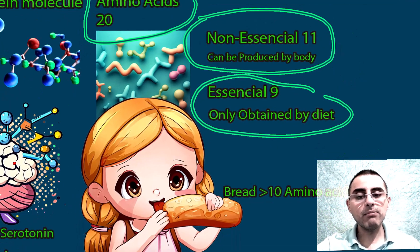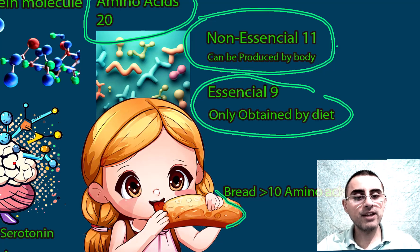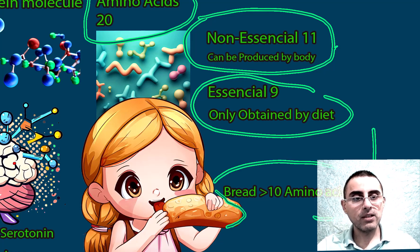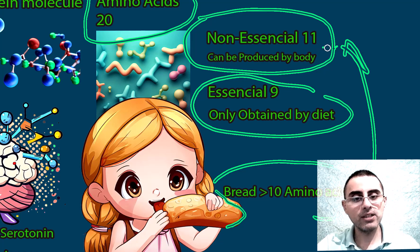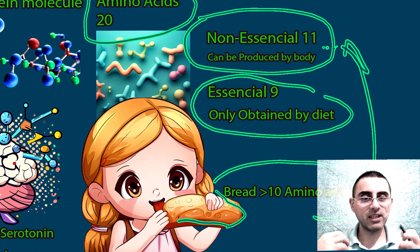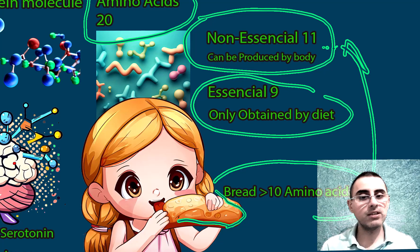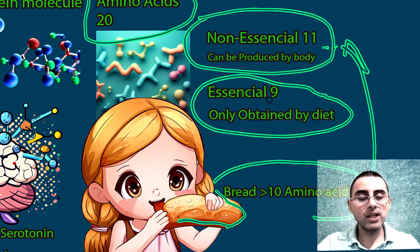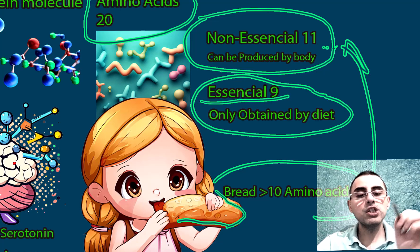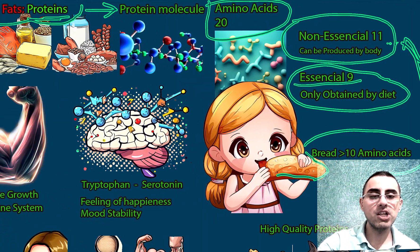For example, if we eat bread and get glucose, our body can synthesize 10 out of the 11 non-essential amino acids — even from a non-amino-acid source like glucose. But if we want to get the 9 essential amino acids, we must eat them directly. That is why they are called essential amino acids.